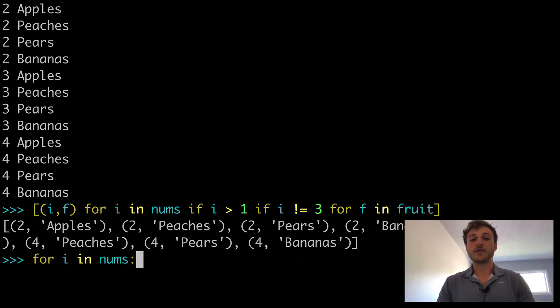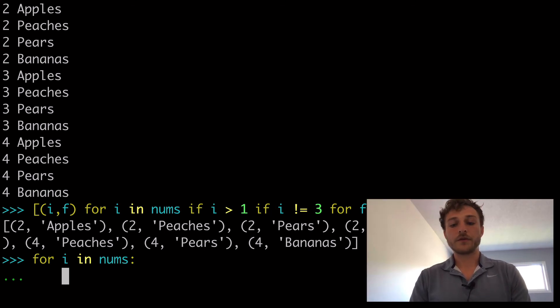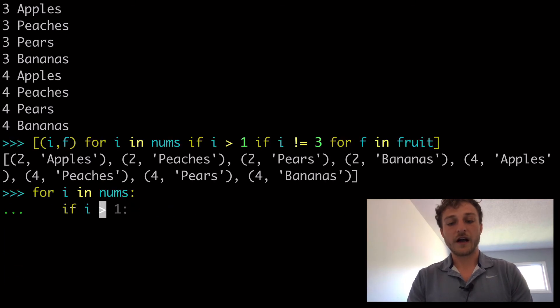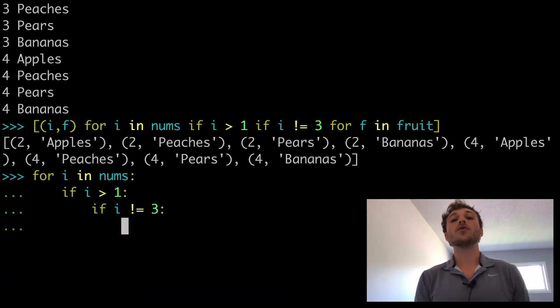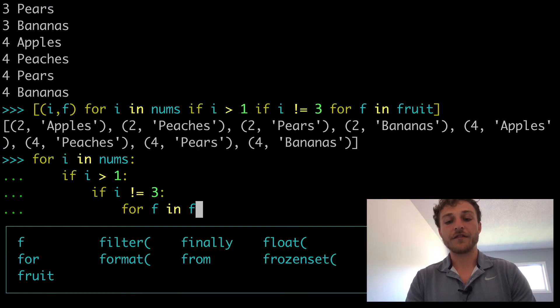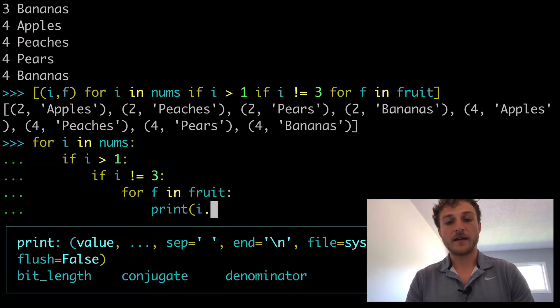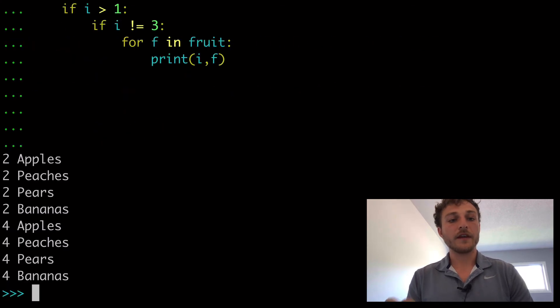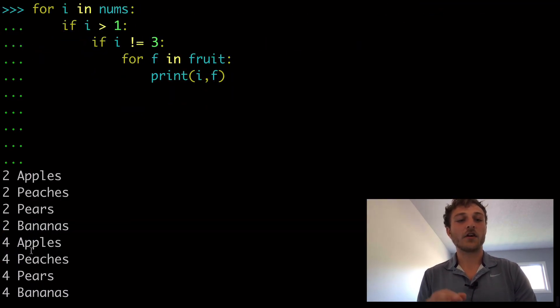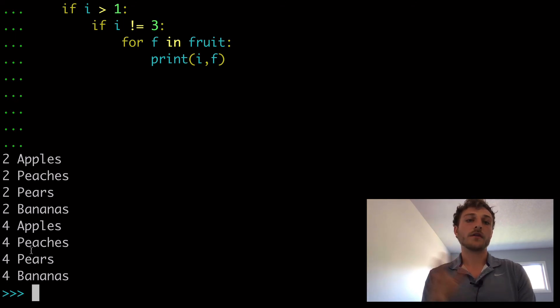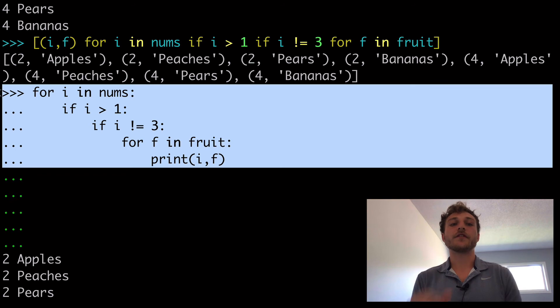And so just to double confirm for everyone, what would that look like in a traditional for loop? Well, we start with our nums and then what would we do? We would do if i greater than 1 and then another nesting of the if, if i does not equal 3. And then only then do we have our second for loop where we can do for f in fruit print i f. So these two things are equivalent and, these are all 2 and 4 as well. We filtered out less than 1 or less than 2 and we filtered out 3. So these two statements are equivalent. This, I hope this is starting to make sense. We have our for loop, our if, our if, and then our for loop.